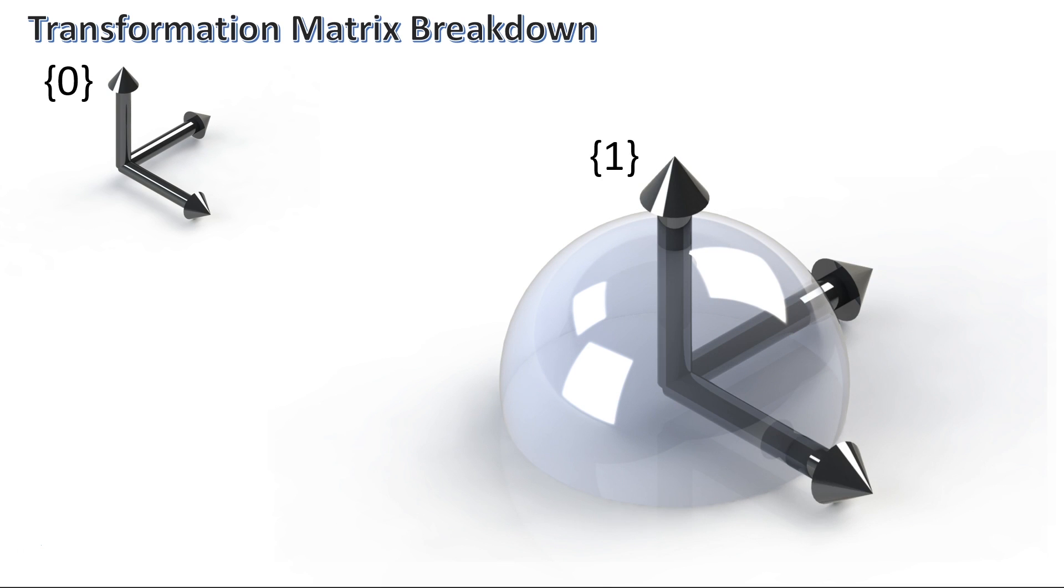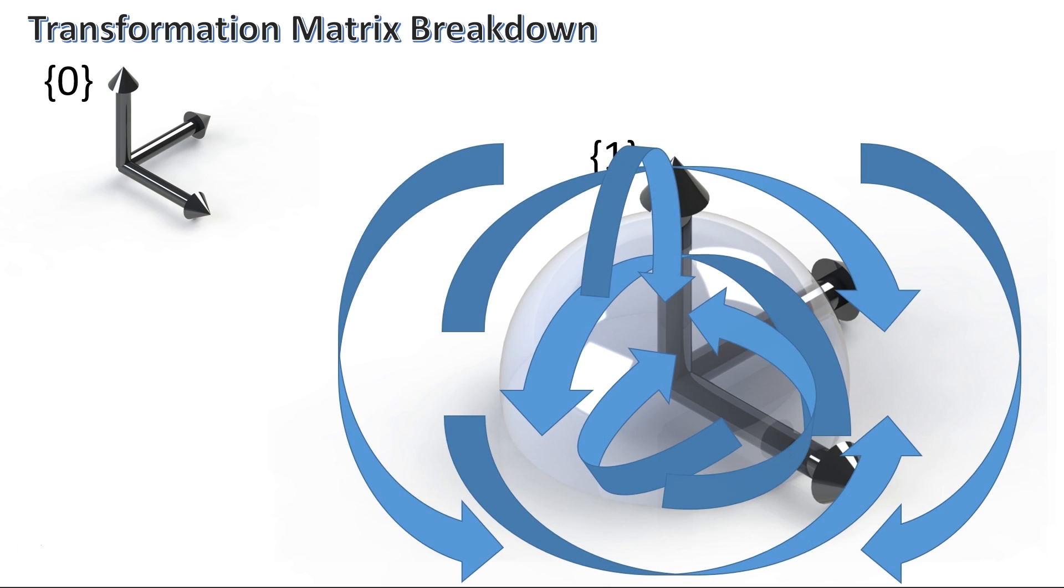It's useful to put a frame on all objects of interest because it gives us a more defined description when rotating and translating the object. So if I said to rotate this object by 30 degrees, there could be several different end configurations.